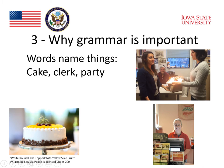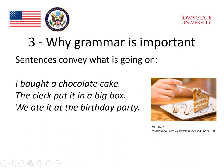Words name things. We can say cake and refer to the cake in the picture. There's a clerk that refers to the clerk standing there. When we say party, we might have an image like a birthday party in the other picture. Each of these words means something, and so in that sense, words have a very important role to play in conveying meaning. But we need sentences to convey what's going on — for example: I bought a chocolate cake. The clerk put it in a big box. And we ate it at the birthday party. That tells what's happening in a way that naming things just can't do.